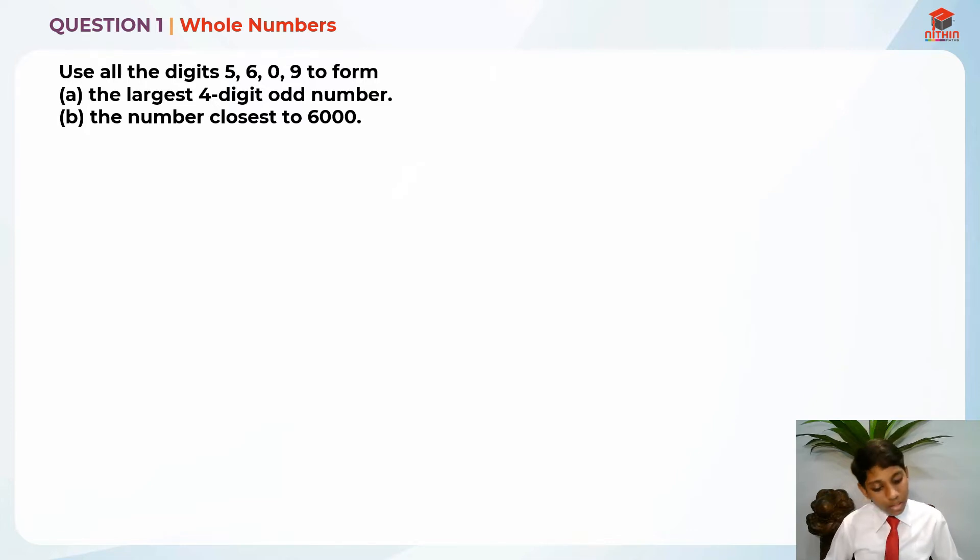Even numbers are actually like 0, 2, 4, 6, 8, 10, 12, etc. And odd numbers actually start from 1. So it's like 1, 3, 5, 7, 9, 11, and more.